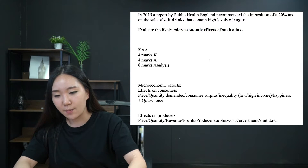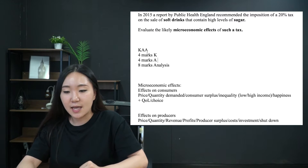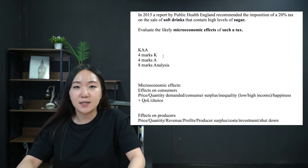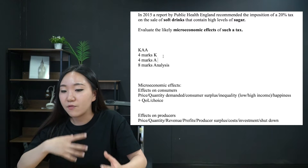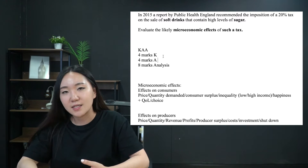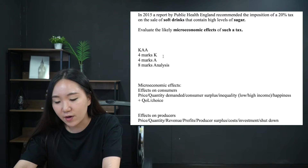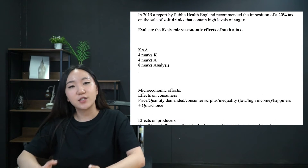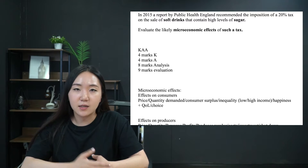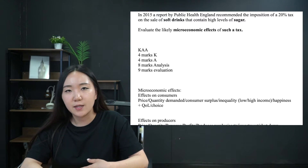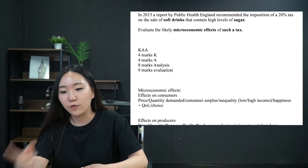In terms of where the marks come from: KAA — knowledge four marks, application four marks, analysis eight marks. What you should take from that isn't that you have to do one mark here, one mark there. Half of those marks are analysis, so the majority of your writing has got to be analysis. Technically, evaluation is the biggest, so the most should be evaluation, followed by analysis, and then knowledge and application should simply be contextualising for sugar and soft drinks or for definitions.